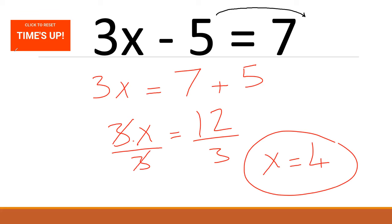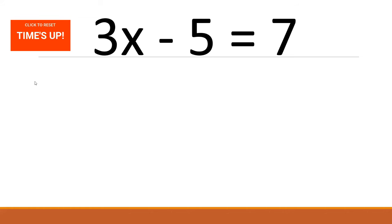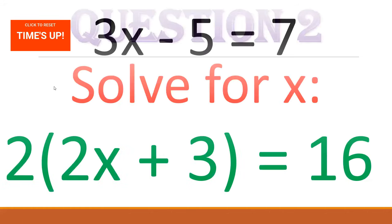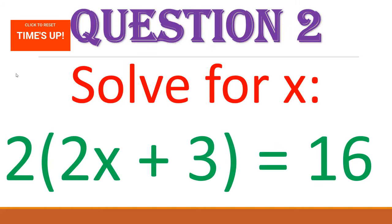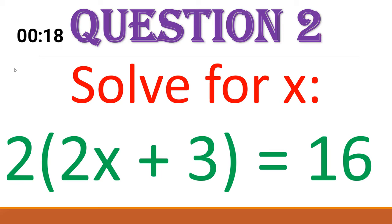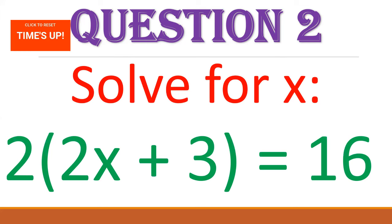Please try first. We are going to the next question now. Question 2 is coming. Let's clear all and continue. We are going to calculate X. Please try. 2 times the quantity 2X plus 3 equals 16. Your 20 seconds starts now. Today we have 5 questions.